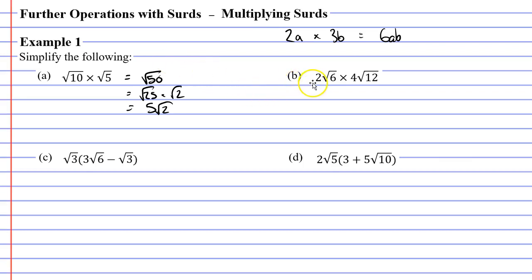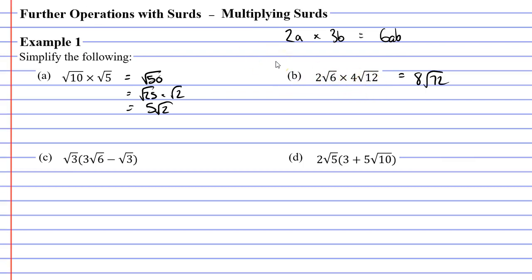We'll start by multiplying the whole numbers: 2 times 4 gives us 8. We'll now multiply the surds — root 6 times root 12. 6 times 12 is 72, so we get the square root of 72.